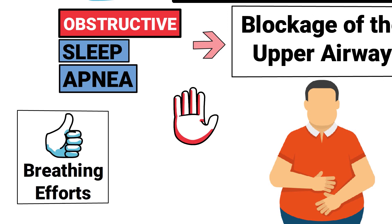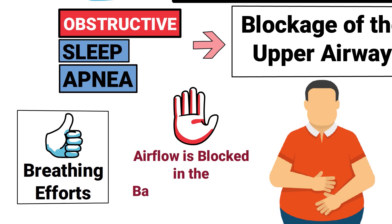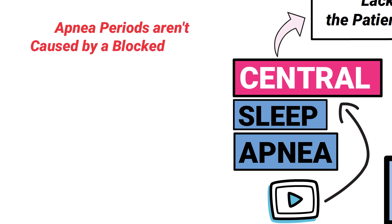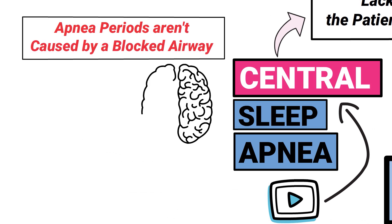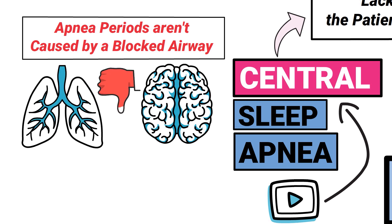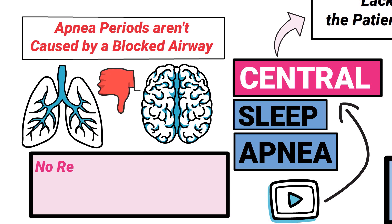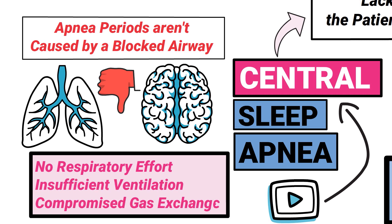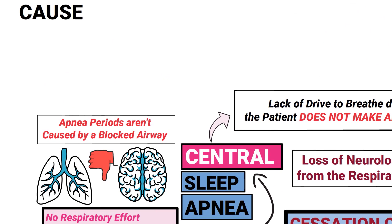In central sleep apnea, the apnea periods aren't caused by a blocked airway. Instead, they occur because the portion of the brain that controls breathing isn't functioning properly. This results in no respiratory effort, insufficient ventilation, and compromised gas exchange.